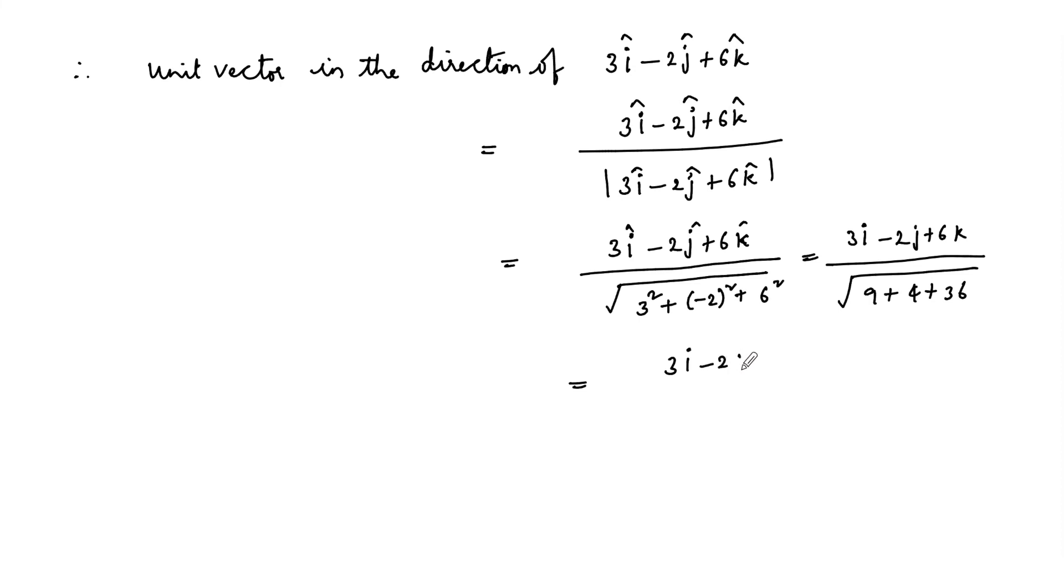3i minus 2j plus 6k upon root of 49. Since modulus is taken positive, we can write square root of 49 is 7, 1 upon 7 times 3i minus 2j plus 6k cap is the answer.